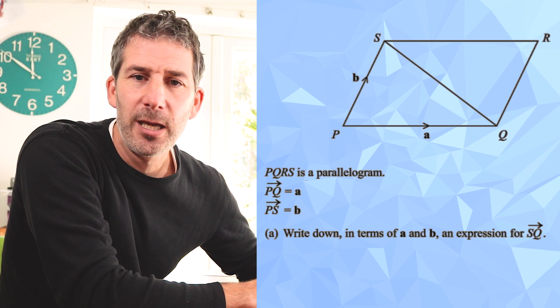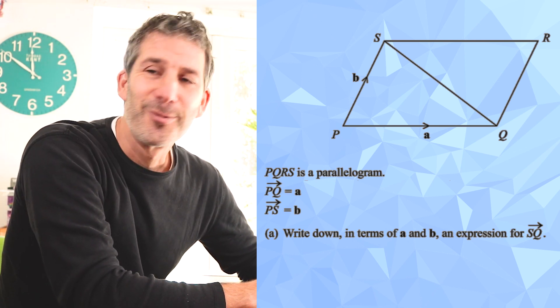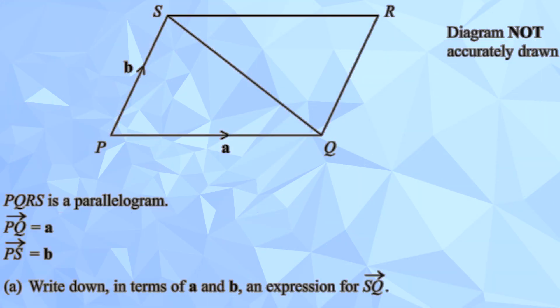Right, back to the question. So we're being asked to write in terms of a and b an expression for vector SQ. Rod, how do you think we can do that? Looking at this, it's a lot different to the one before, but I guess it would be minus b plus a.